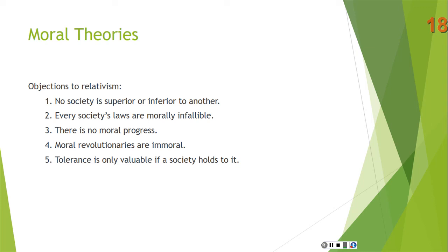Third: there is no moral progress on relativism — just a shift from one moral code to another. So when we went from segregation to desegregation, on relativism that's not an improvement, just a move from one viewpoint to another. If you think MLK Jr. was doing something good in peacefully fighting for desegregation, you should reject relativism, because on relativism Martin Luther King Jr. wasn't doing anything good — he was just shifting the society from one moral code to another.